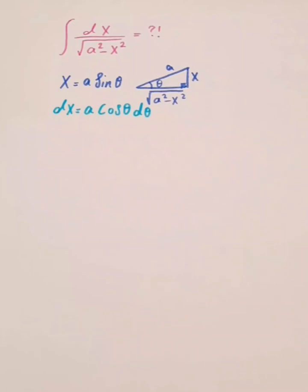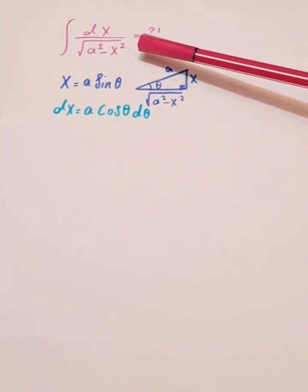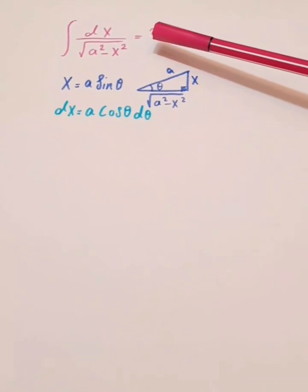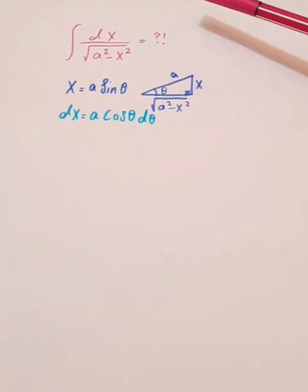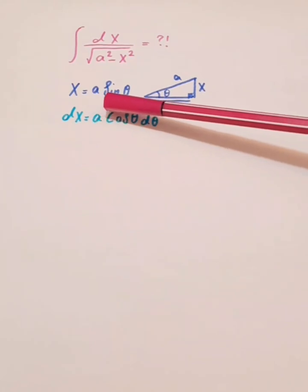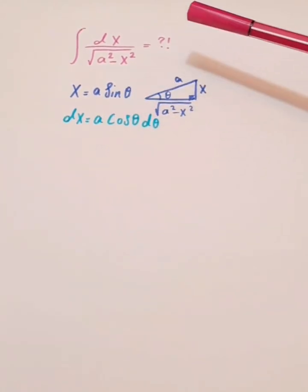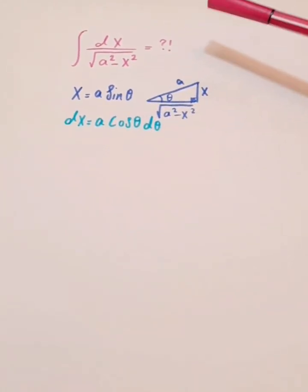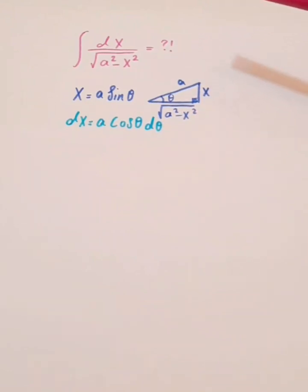Before starting, it's useful to know that when you have a² minus x² inside an integral, it's better to use the variable transformation x = a·sin(θ). That's a useful substitution to solve this type of integral.